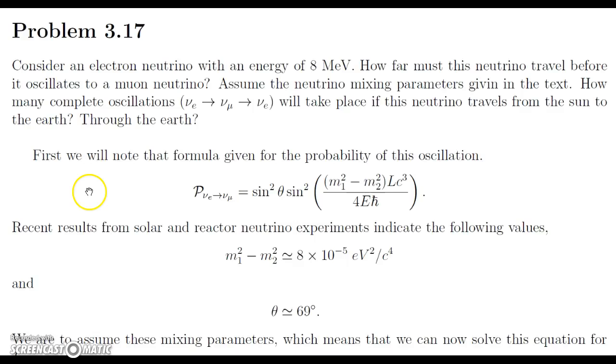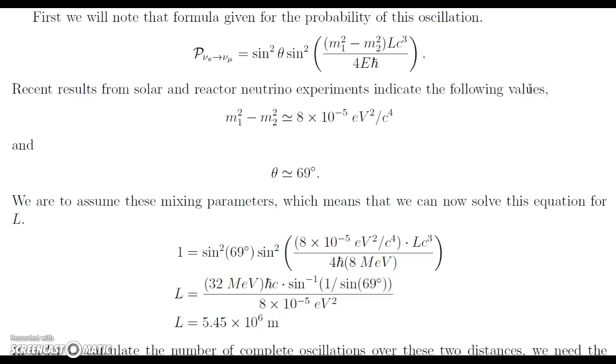So first we will note the formula given for the probability of this oscillation. And this formula is derived in a similar way as the spin flip process given in McIntyre in the same chapter. So the probability of going from an electron neutrino to a muon neutrino is sine squared of theta, which we call the mixing angle, times sine squared of this quantity here, which is the differences of the masses squared.